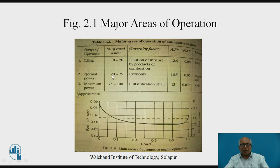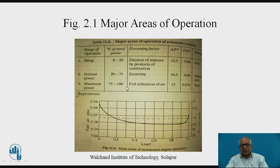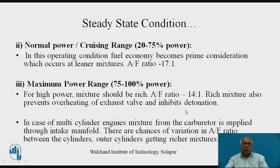The second condition is normal power, where we produce 20% to 75% of the rated load. This is the major operation area and economy is the main consideration. For achieving economy, the air-fuel ratio is required to be leaner — around 16.5:1 or 17:1 — practically up to 75% of the load. Beyond that is the maximum power range, where again a richer mixture is required, with an air-fuel ratio around 14:1. So for normal power, also called the cruising range, the requirement is 17:1, and for maximum power it is 14:1.